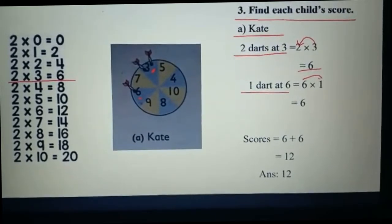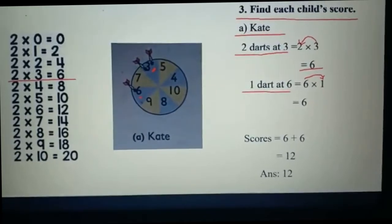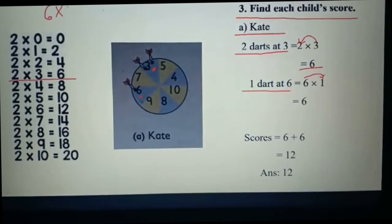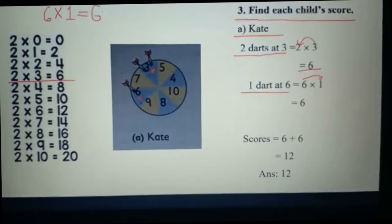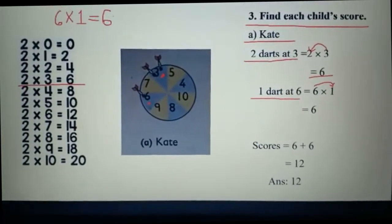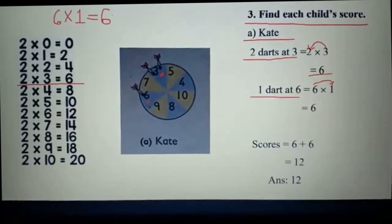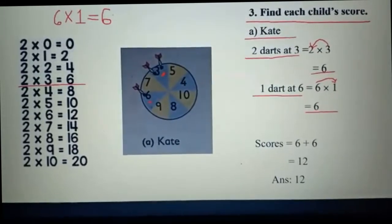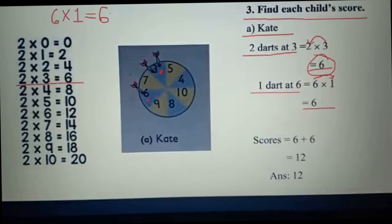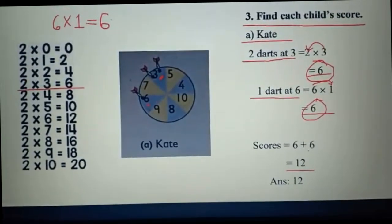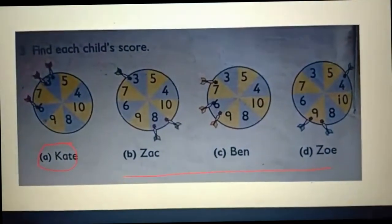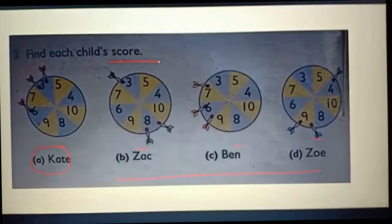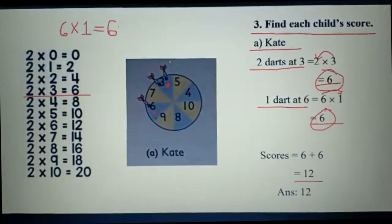One dart at six: six multiply by one. Six ones are six. So we get six and six. If you add six and six, we get the total score — the answer will be 12. You have to solve Zach's, Ben's, and Zoe's scores by yourself. I hope all of you understand. Thank you!